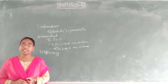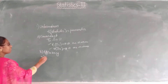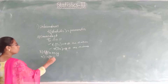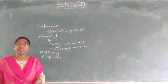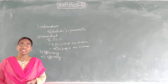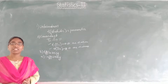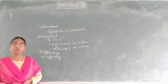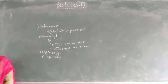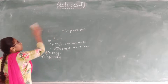The last characteristic is sufficiency. Here we consider the conditional distribution of TN given the sample values x1, x2, and so on. That conditional distribution should be independent of theta, that is, independent of the parameter. These are the four characteristics of a good estimator.